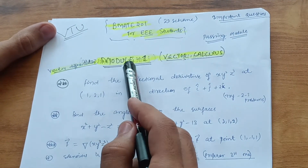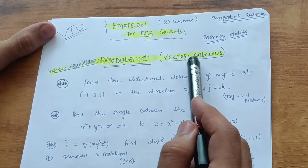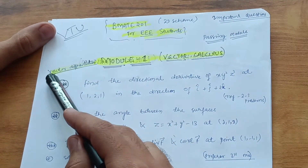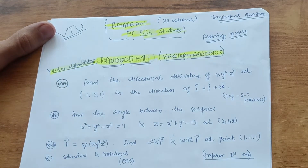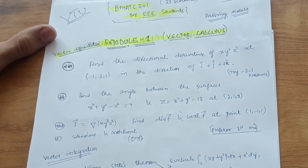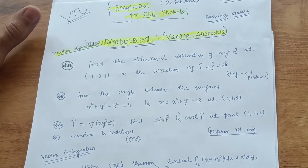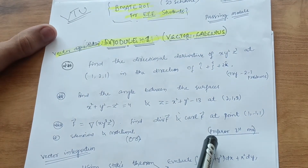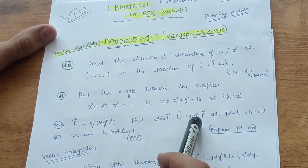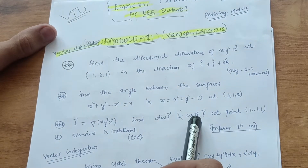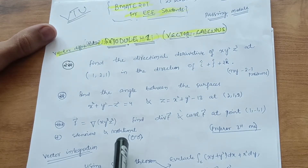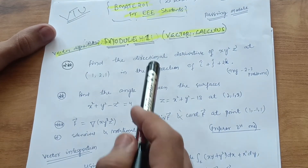First, focus on Module 1 — Vector Calculus. It contains two chapters: Vector Differentiation and Vector Integration. You must focus on Vector Differentiation as it is the easier one — I have written here 'prefer the first one.' Vector Integration is a little bit tougher, so prioritize differentiation.